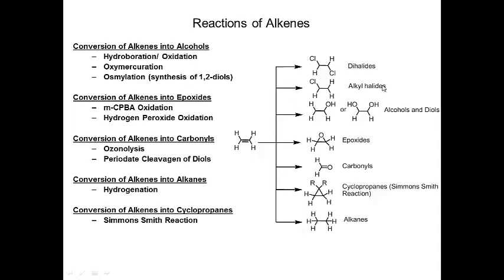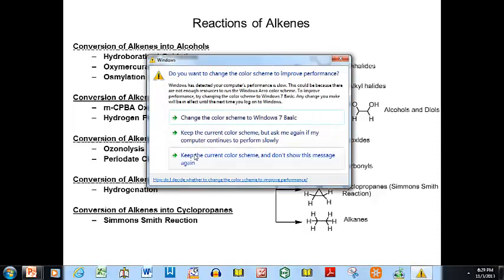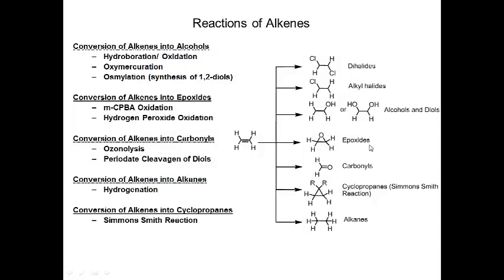Osmylation gives a diol. We'll also talk about epoxides, which are cyclic ethers with a three-membered ring where oxygen is one of the atoms. We're also going to look at ozonolysis, periodate cleavage of diols, and conversion of alkenes into alkanes and cyclopropanes.